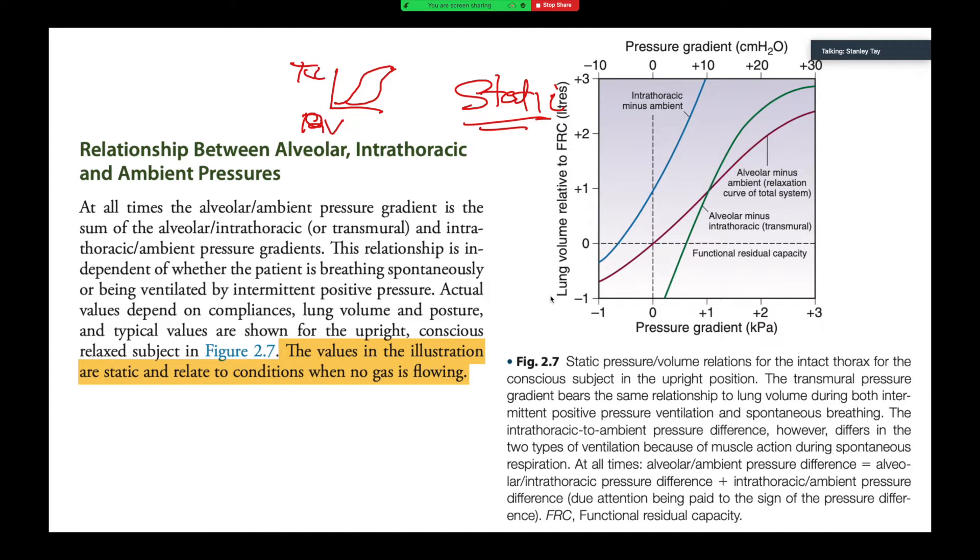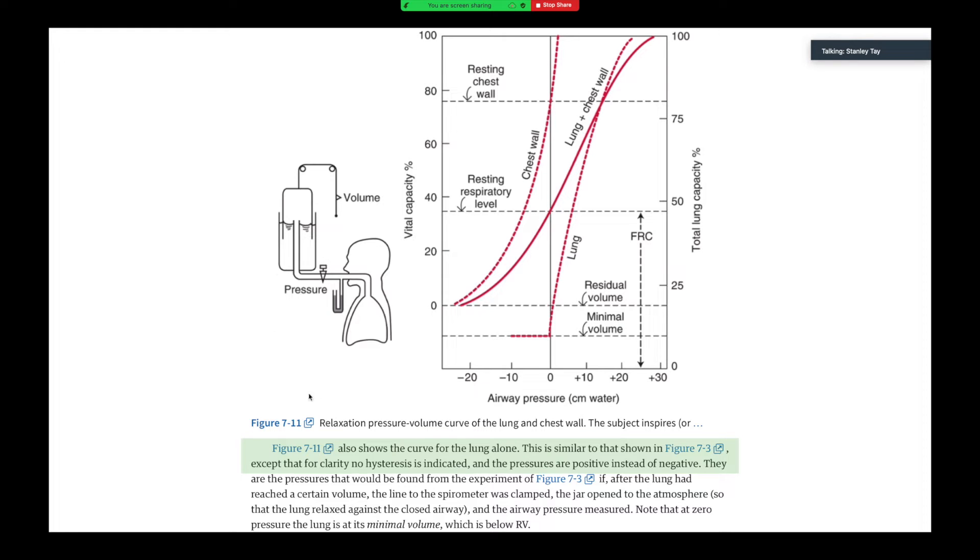And then we have to read West. So figure 7.11, which is the same curve here, this is similar to that shown in 7.3. And 7.3 is a static compliance curve of a cat. Except that for clarity, no hysteresis is indicated. And that answers this question here in terms of why it doesn't look like this. They've excluded the hysteresis.